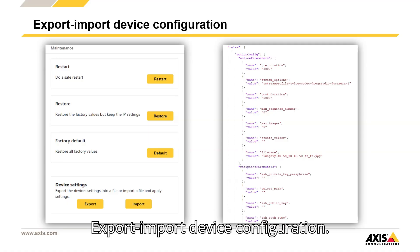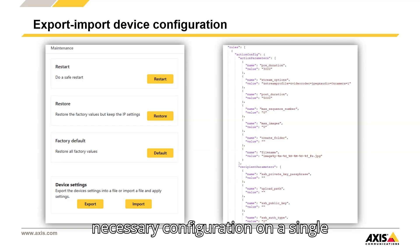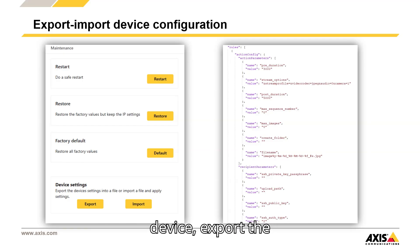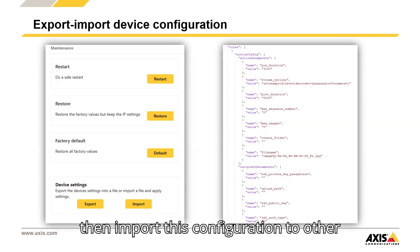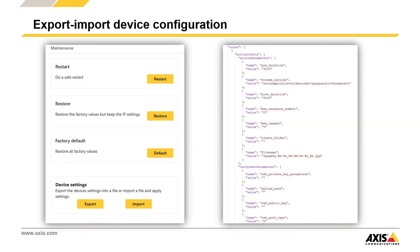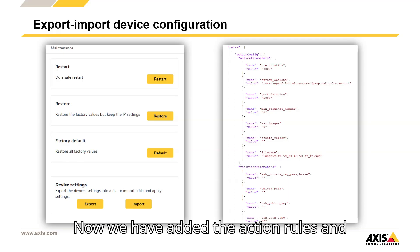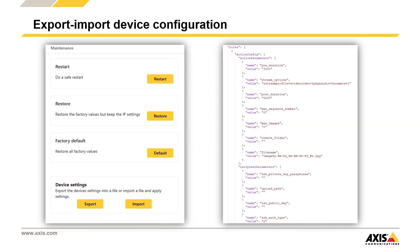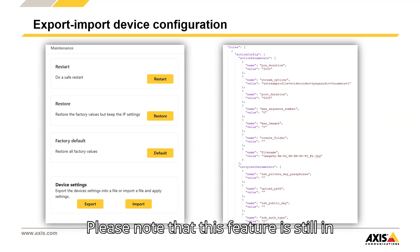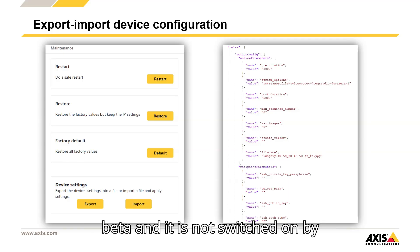Export and import device configuration enables users to perform necessary configuration on a single device, export the settings to a JSON file, and then import this configuration to other devices via the web interface. This feature was initially released in AxisOS 12.4 and has been gradually complemented. Now we have added action rules and recipients to the export list as well. Please note that this feature is still in beta and is not switched on by default.